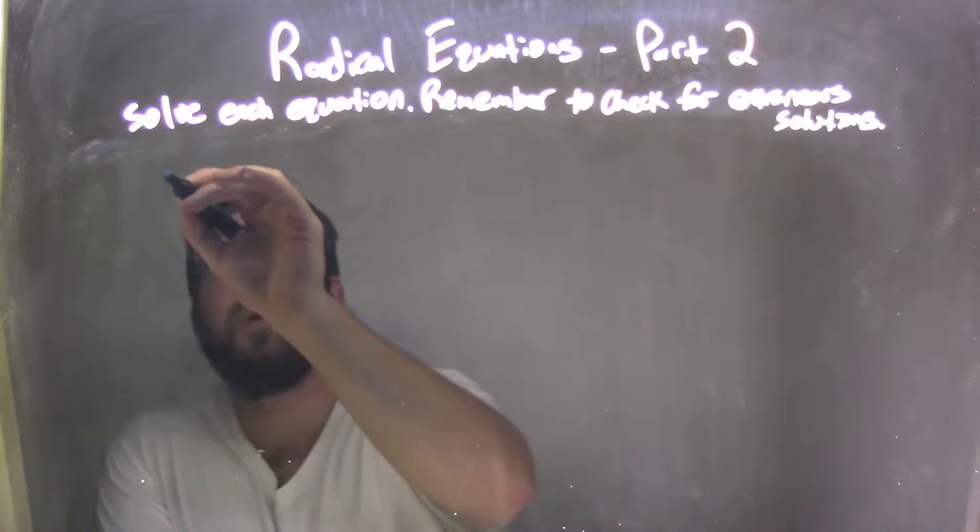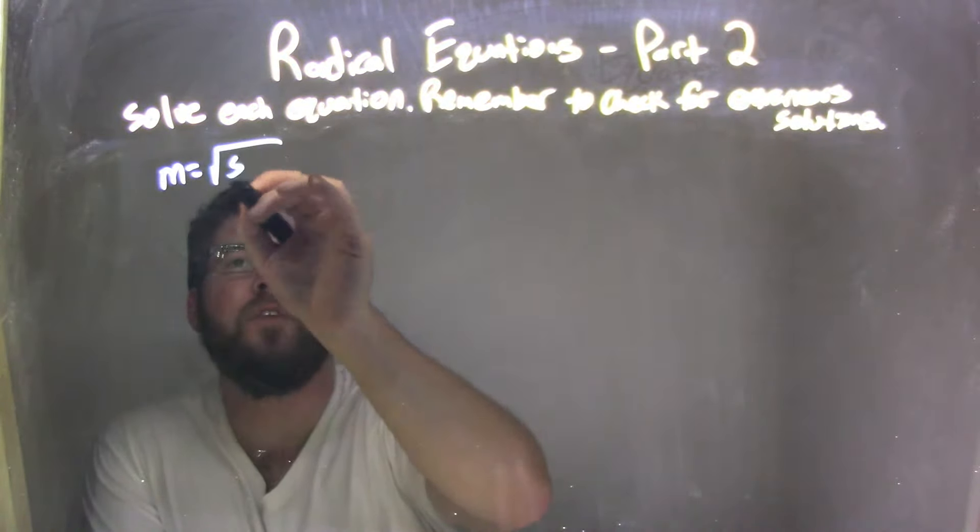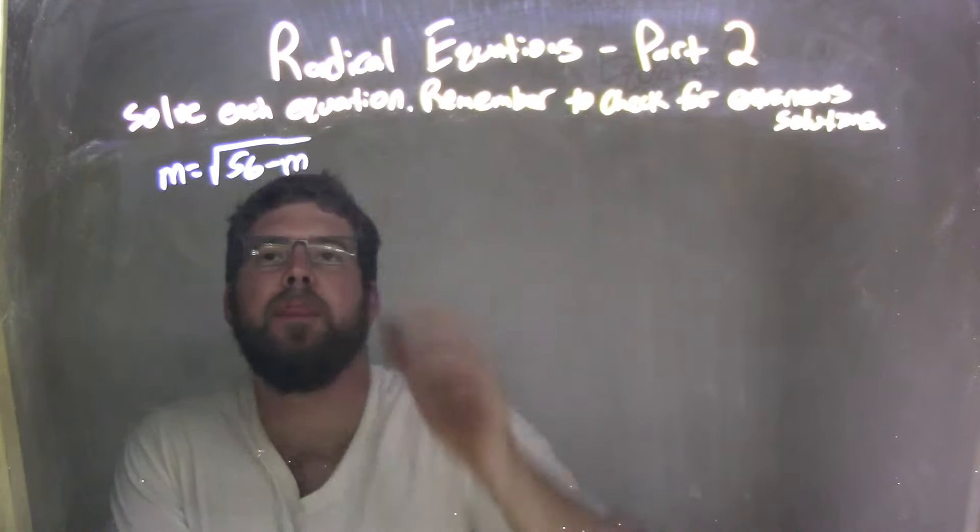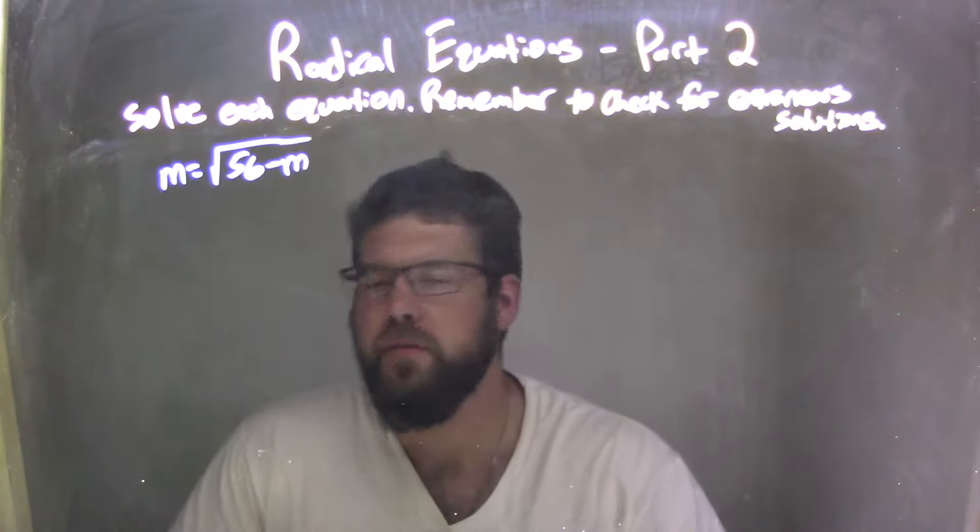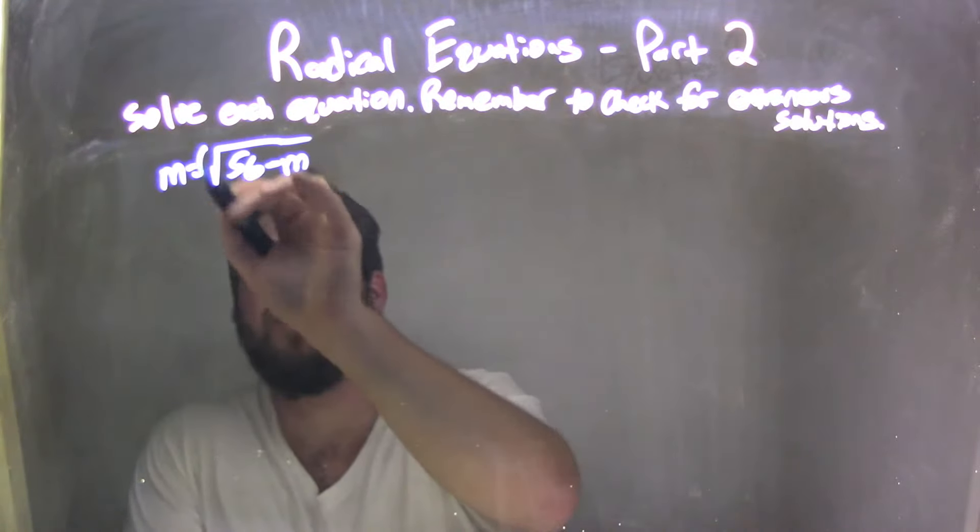If I was given this equation, m equals the square root of 56 minus m, I'm going to square both sides to get rid of that radical. I don't like it, doesn't need to be there.